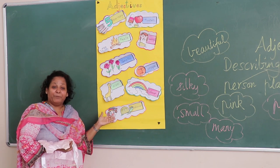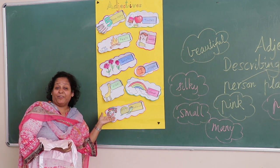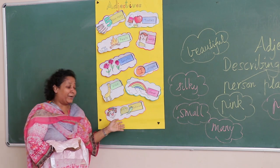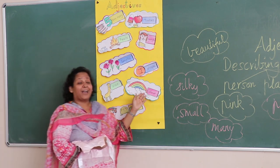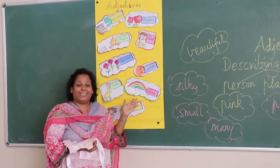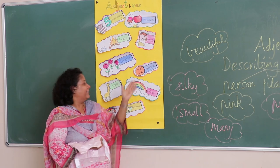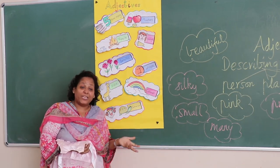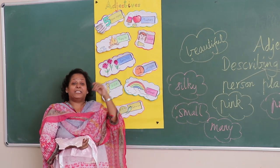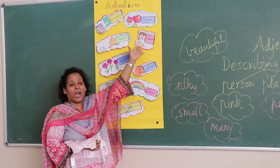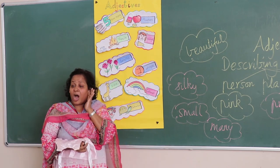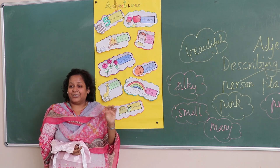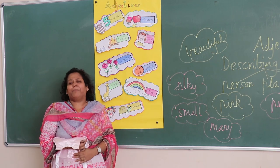Behavior — beautiful. He's a very good person. He's a bad person. Color — it's black and white, it's red, pink. Shape — it's round in shape, it's oval in shape, it's square in shape. Then sound — it's loud, it's very quiet, melodious, rumbling.